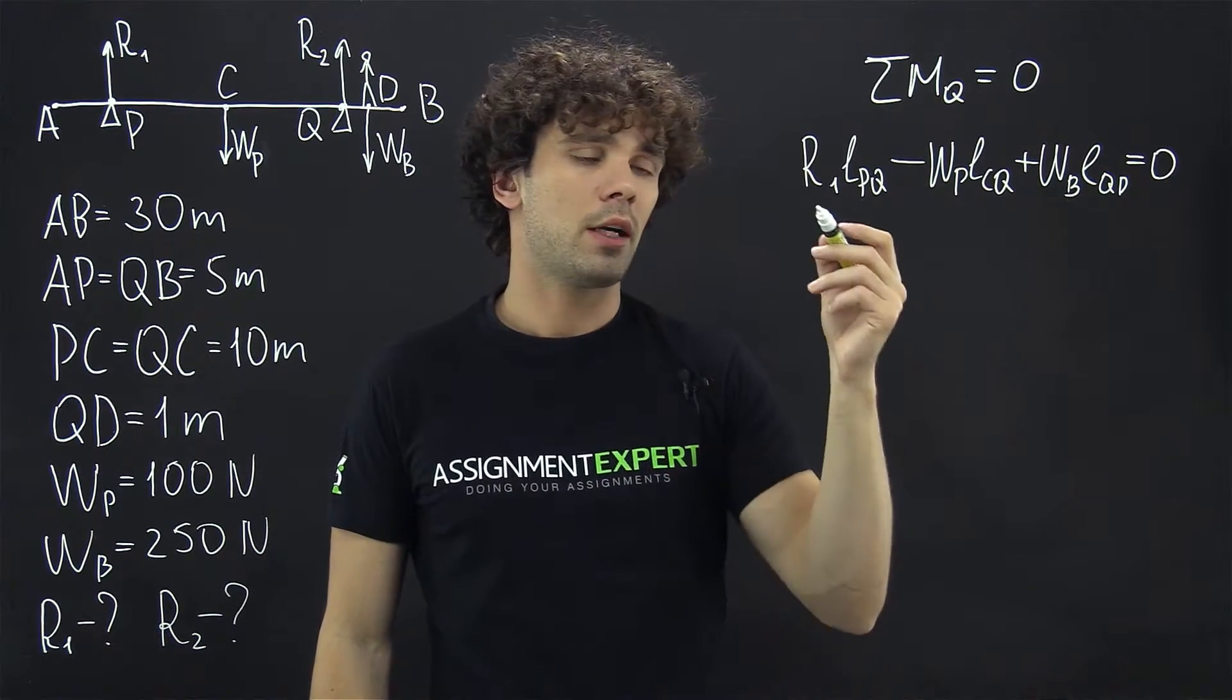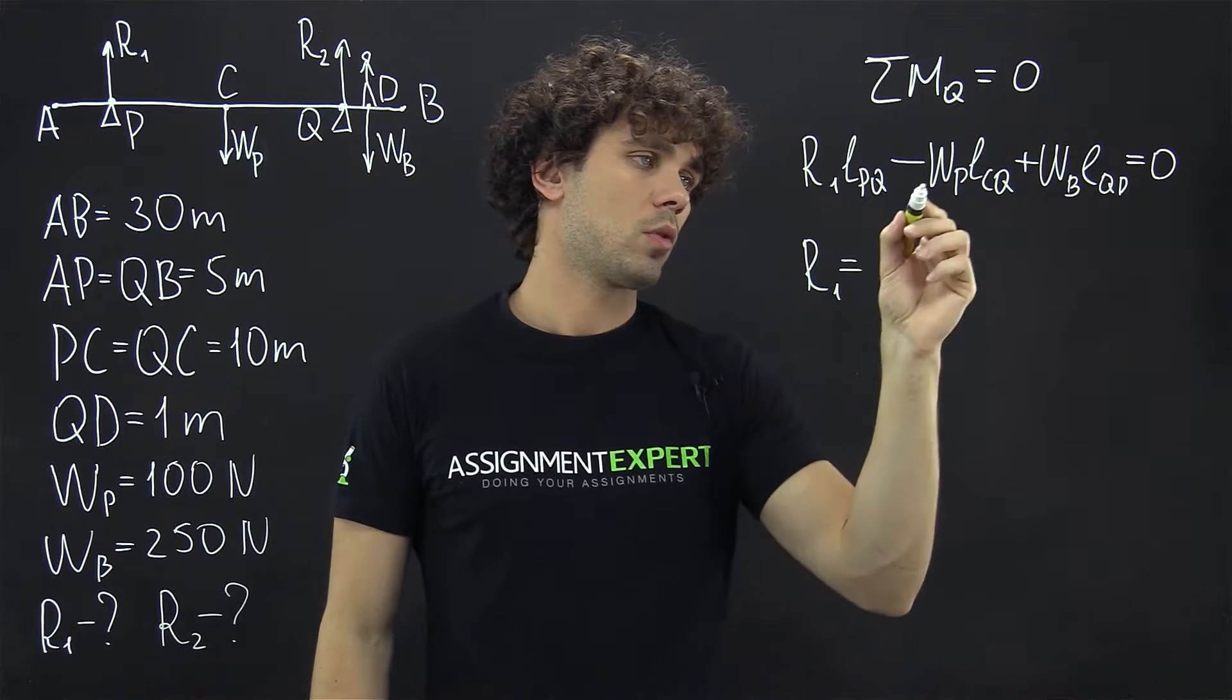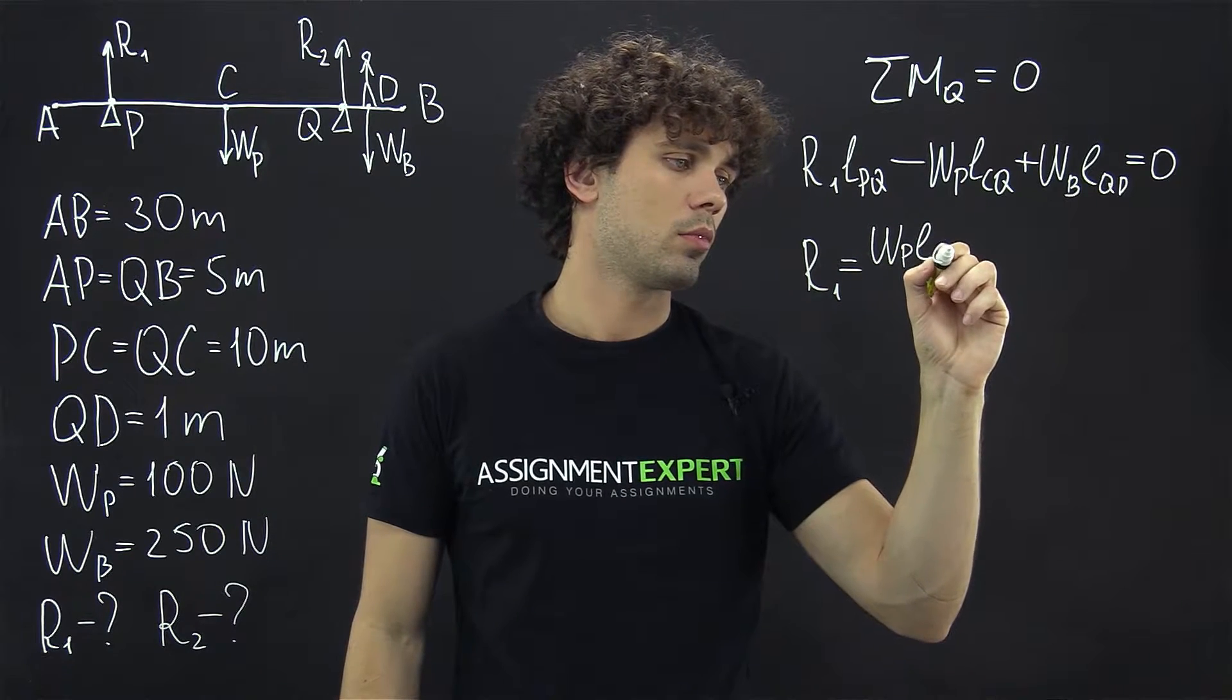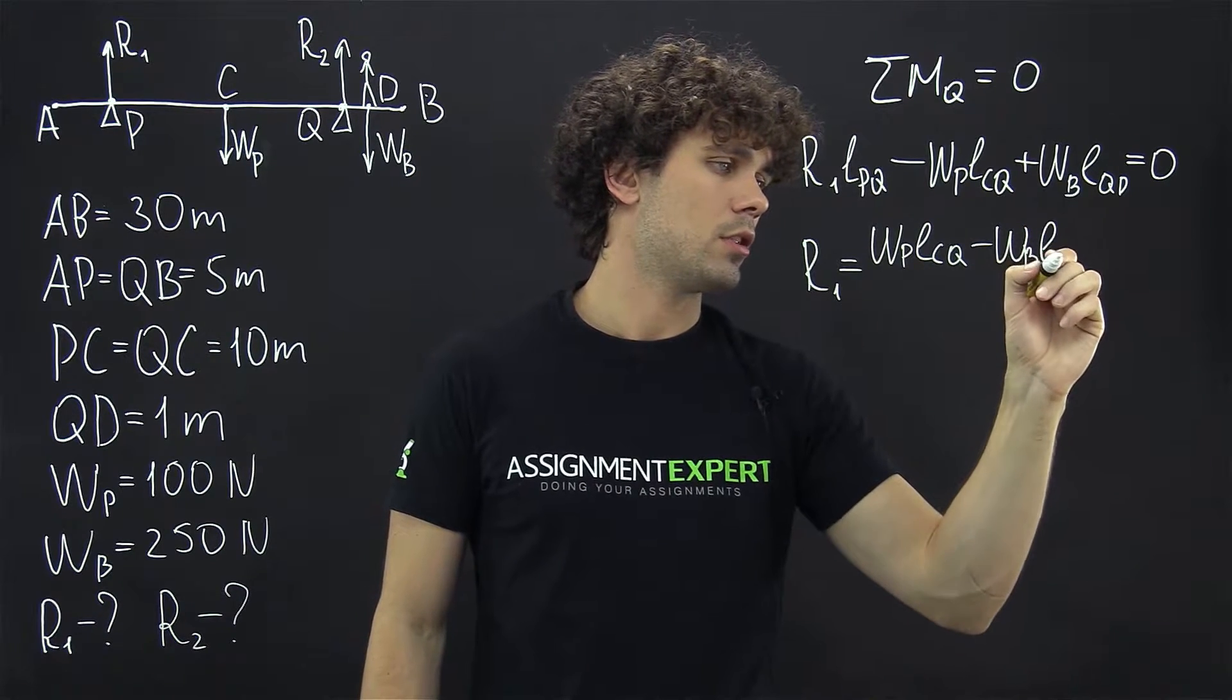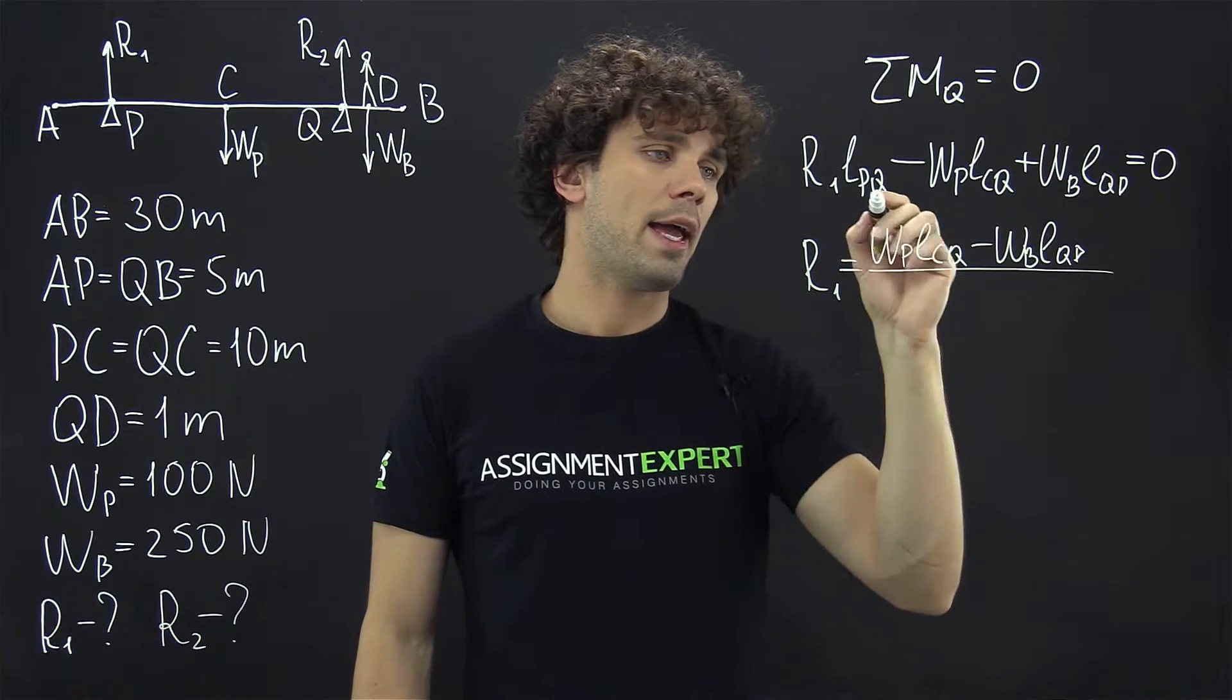Now from this equation we can find R1. R1 equals WP times LCQ minus WB times LQD, all divided by LPQ.